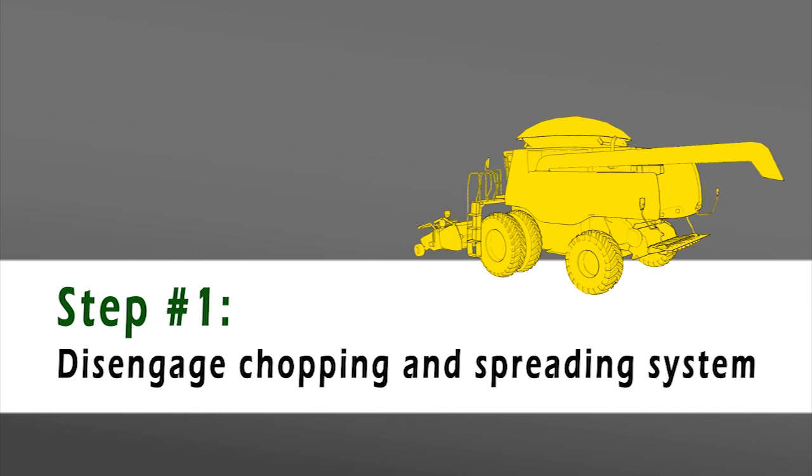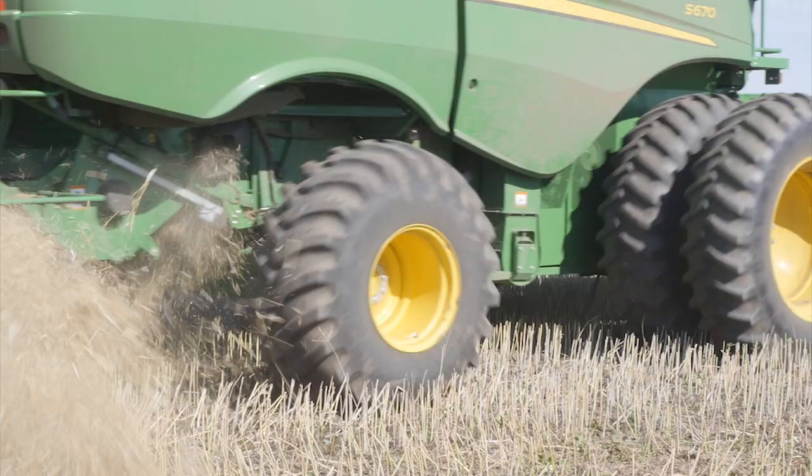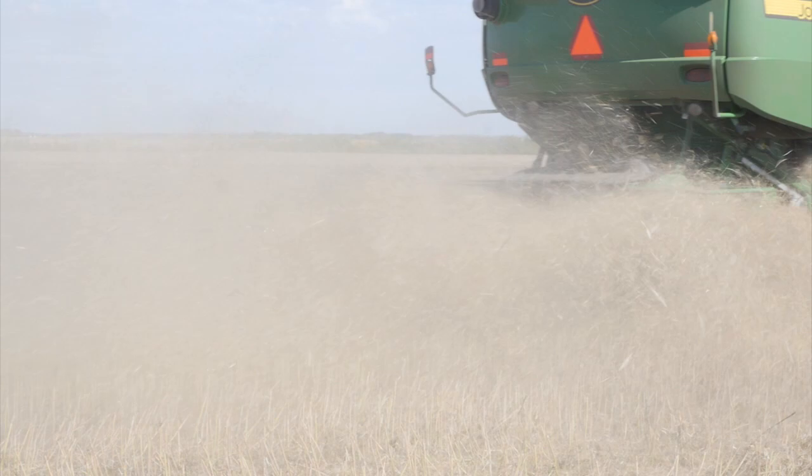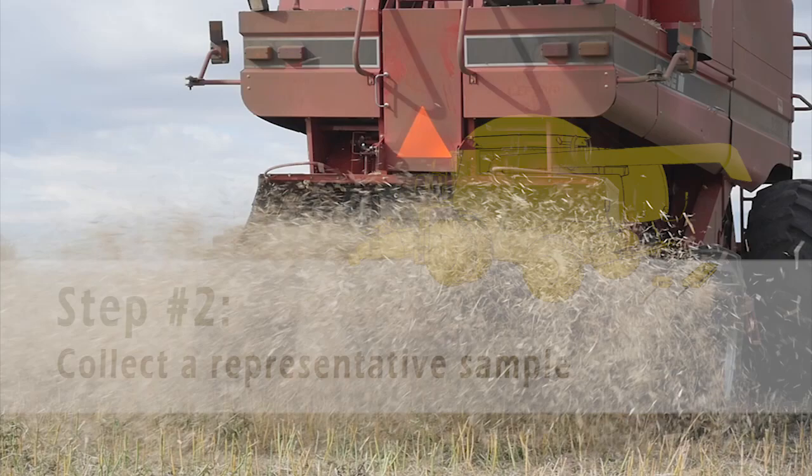The only way you can get a really good measurement is to get your chopper out of the way and spreaders out of the way so that it's dropping straight down. Once you put the chopper and the spreader on, it's really guesswork as to how much you're catching out there. It's less and less accurate.